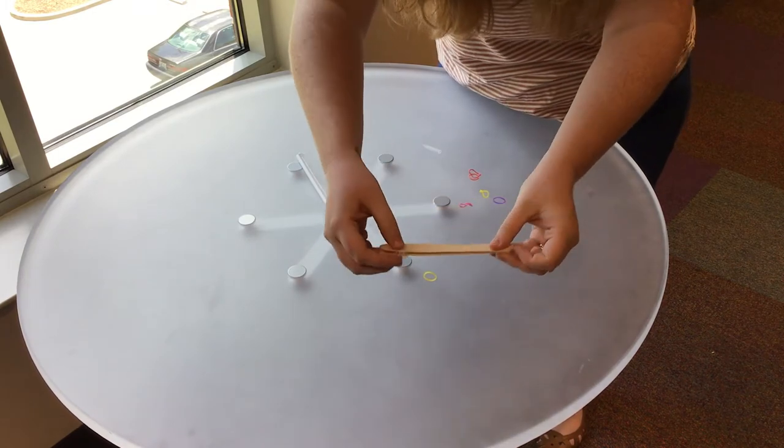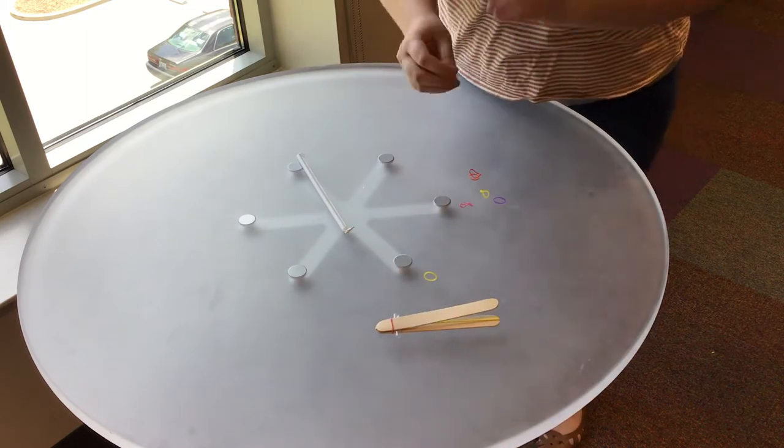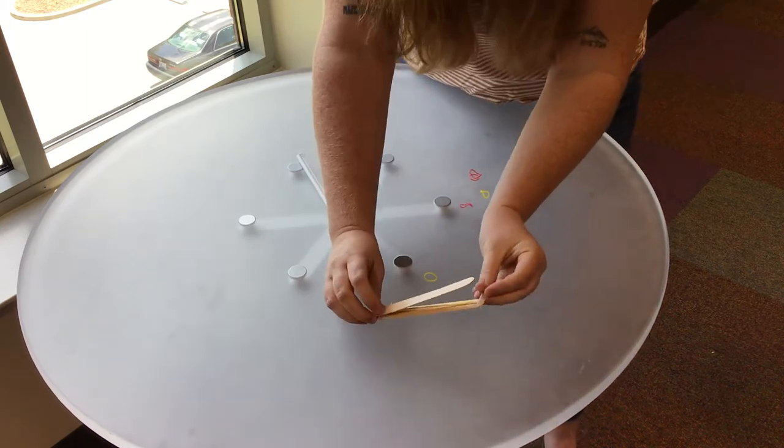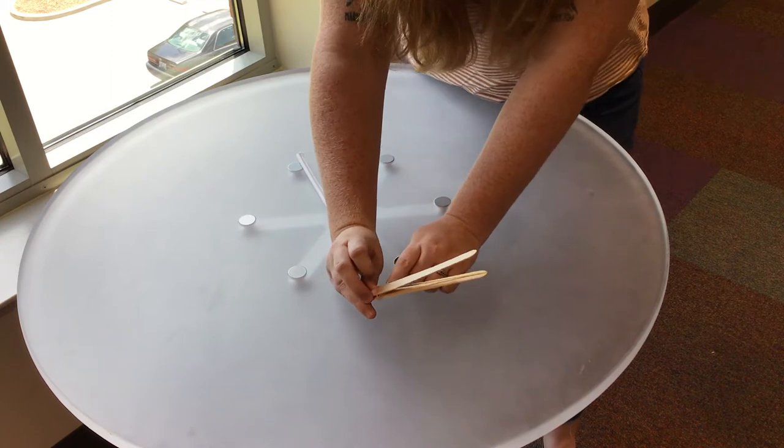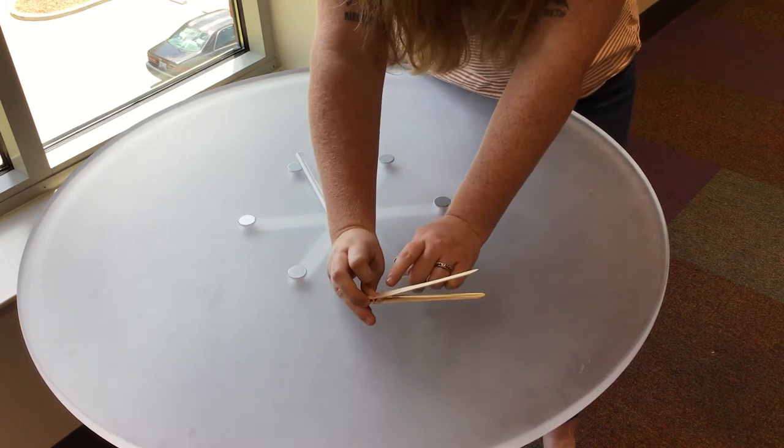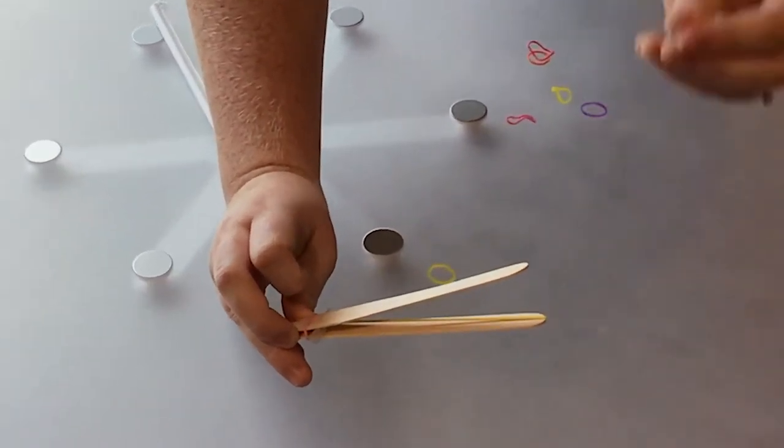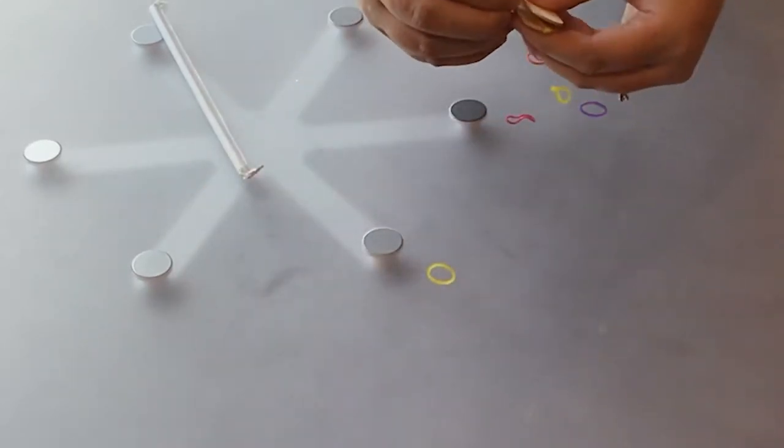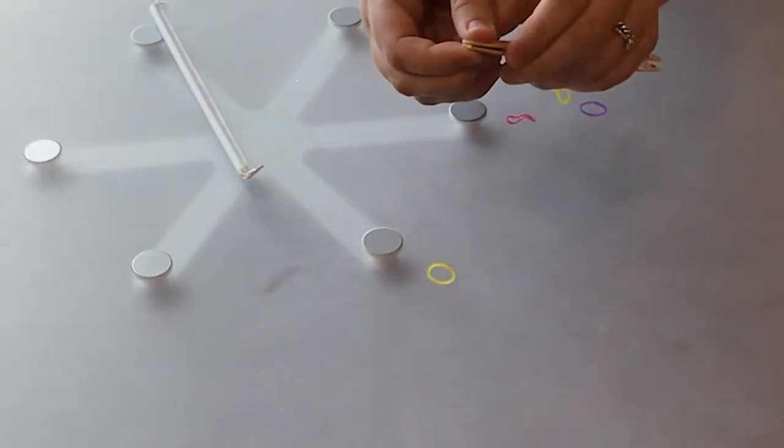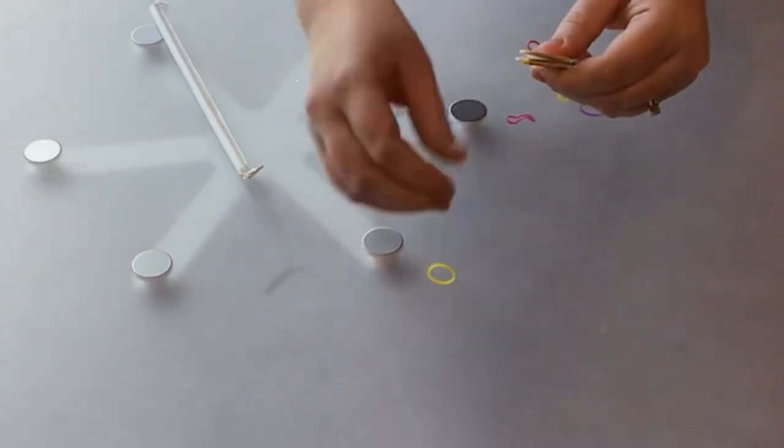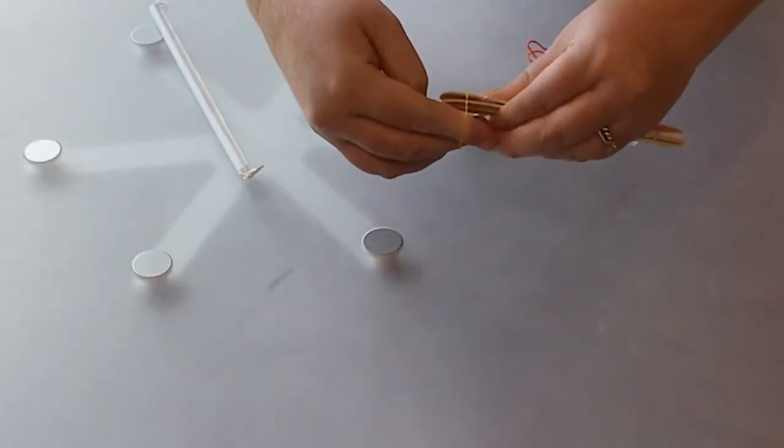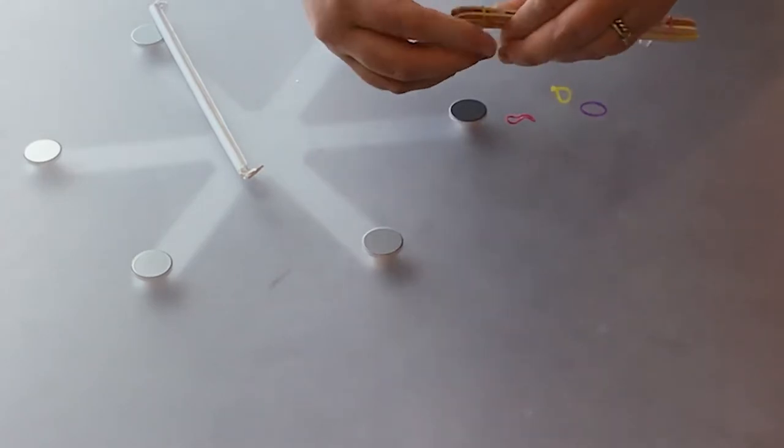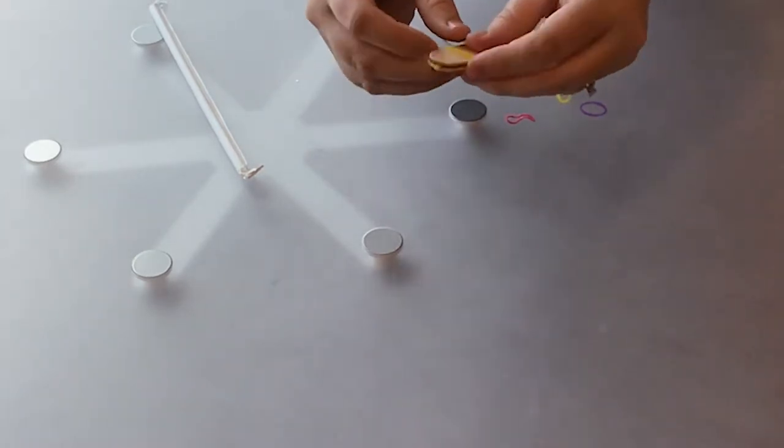Now we're going to take our next straw piece and put it on top of the rubber band. So for our first straw piece we put it under the rubber band, the big rubber band, and for our next piece we're going to put it on top of the rubber band. And we're going to do the same thing. We're going to take another small rubber band and wrap it around the other side.